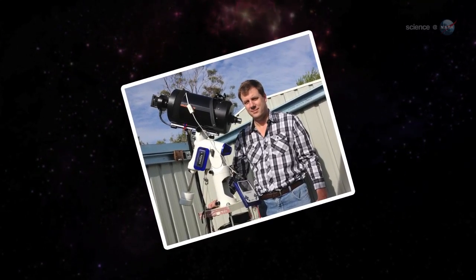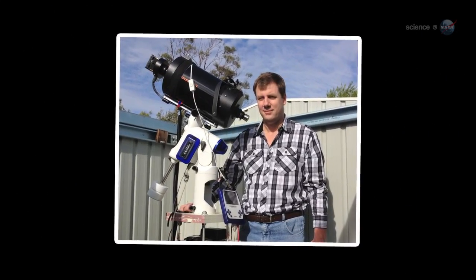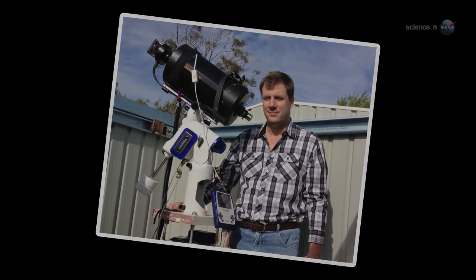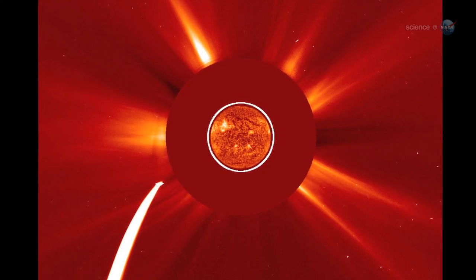Last November, amateur astronomer Terry Lovejoy discovered a different kind of comet. The icy fuzzball he spotted in the sky over his backyard observatory in Australia was heading almost directly for the Sun.